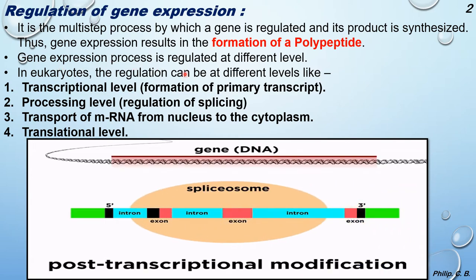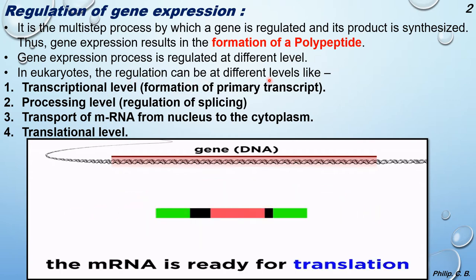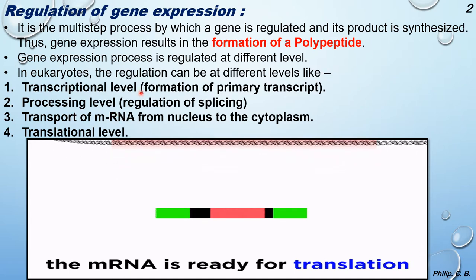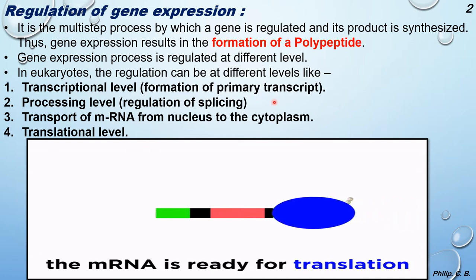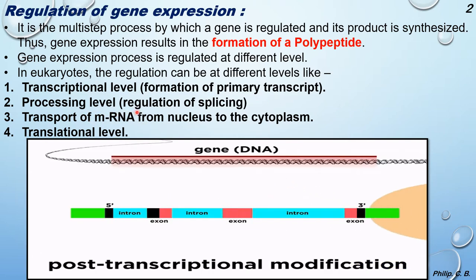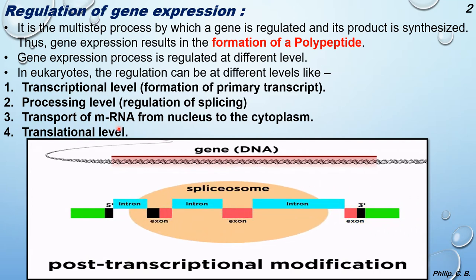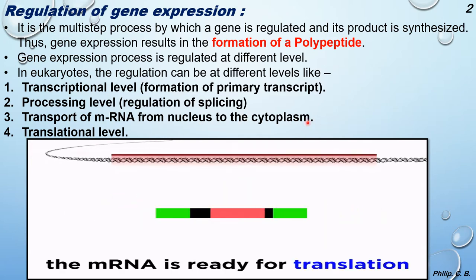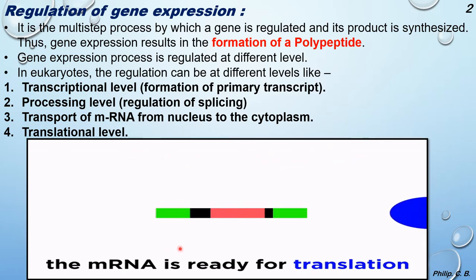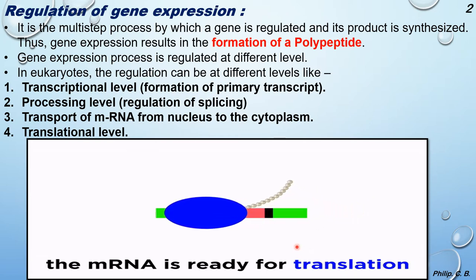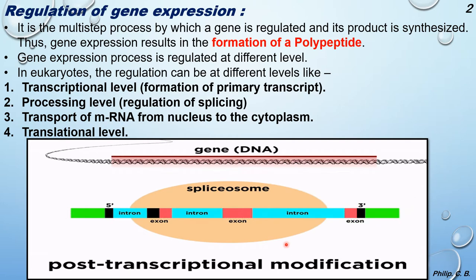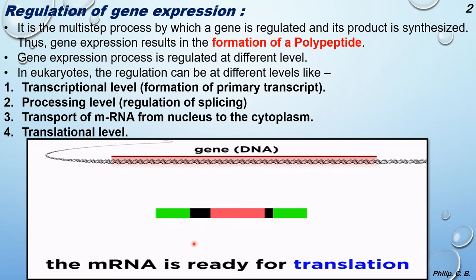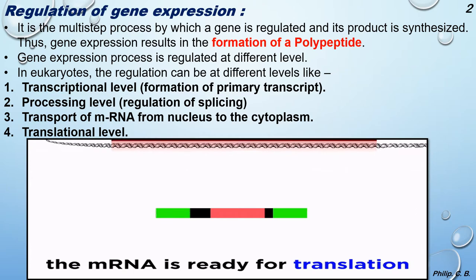Gene expression is regulated at different levels. In eukaryotes, regulation occurs at the transcriptional level where the primary transcript is formed, the processing level where splicing is regulated, transport of mRNA from nucleus to cytoplasm, and the translational level. The intron is spliced or removed and the exon is joined, as seen in earlier videos.